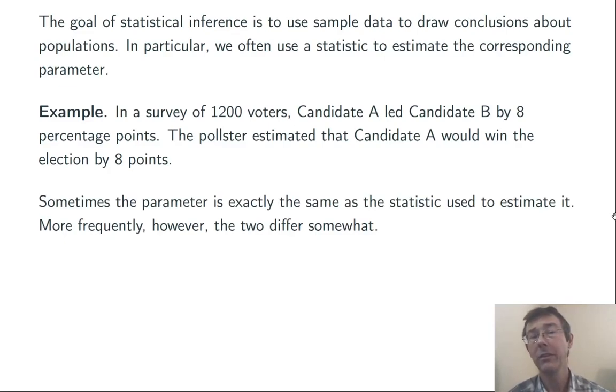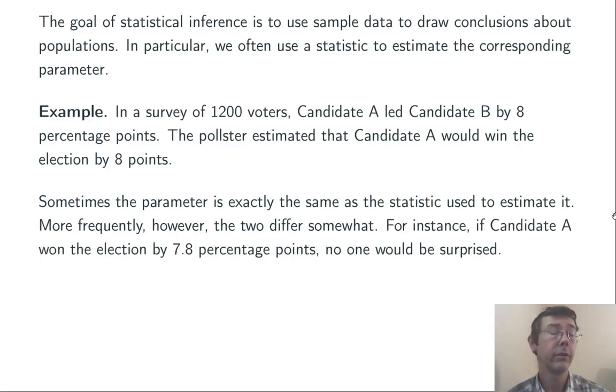Now, sometimes our statistic ends up being exactly the same as the parameter. More frequently though, they differ by a little bit. For instance, the actual outcome of the election could be that candidate A wins by 7.8 percentage points. And in that case, no one would be particularly surprised, or inclined to blame the pollster for messing up.